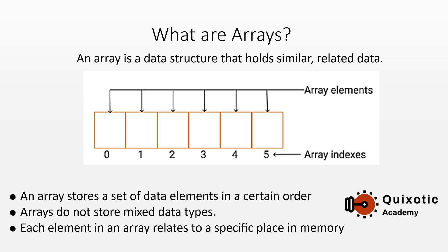An array is a data structure that holds similar related data. An array is like a collection of boxes, each of which is called an element. A variable can store just one element, one value. However, an array can store lots of values — lots of elements. Like a cell can store just one value, a table has many cells that can store many values.